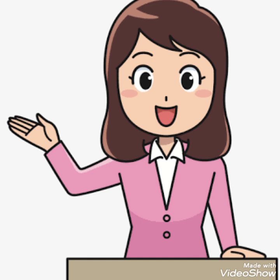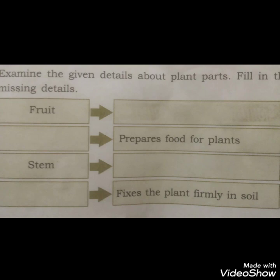Do the following activities based on this unit. First, examine the given details about plant parts and fill in the missing details. One column lists fruit and stem; the other column states: prepares food for plants, fixes the plant firmly in the soil. Write the missing words.